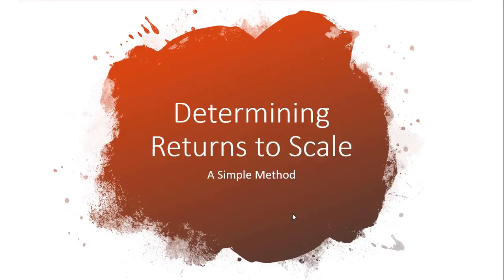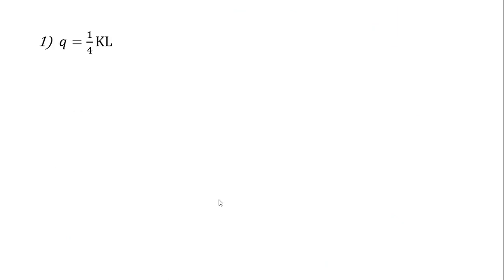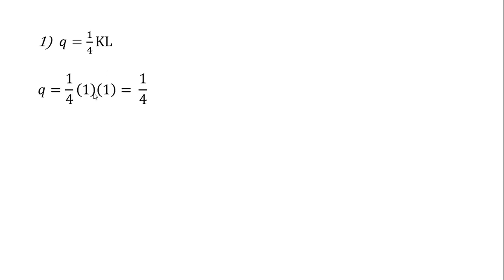In this video, we're going to look at production functions and returns to scale and show a simple method to determine what the returns to scale are. Here's a production function: Q, output, equals one-fourth K times L, where K is units of capital and L is units of labor. Let's determine the returns to scale from this production function.